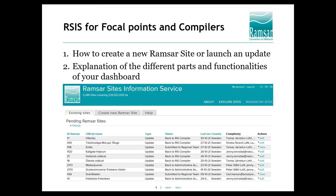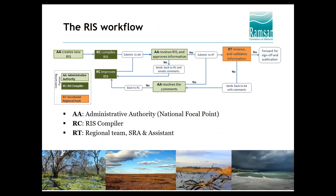This was the publicly available part. Now we will switch to the part which is only for focal points and compilers, covering how to create a new site or launch an update, including explanations of your dashboards. Before switching back to the system, we will have a quick look at the RIS workflow. The site goes through three different levels: from the RIS compiler to the AEA and then to the regional team. On each level a site can be rejected. When a site is complete, the secretariat will process it for publication. This workflow is available in the RSIS PDF tutorial.